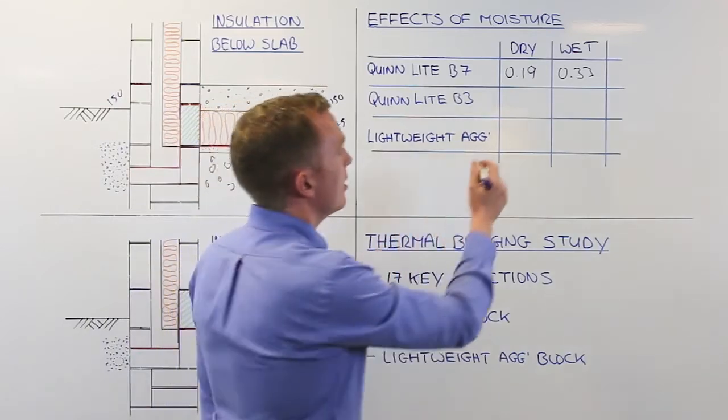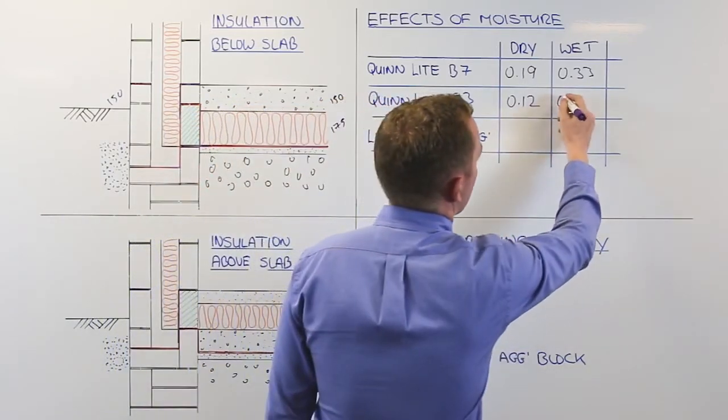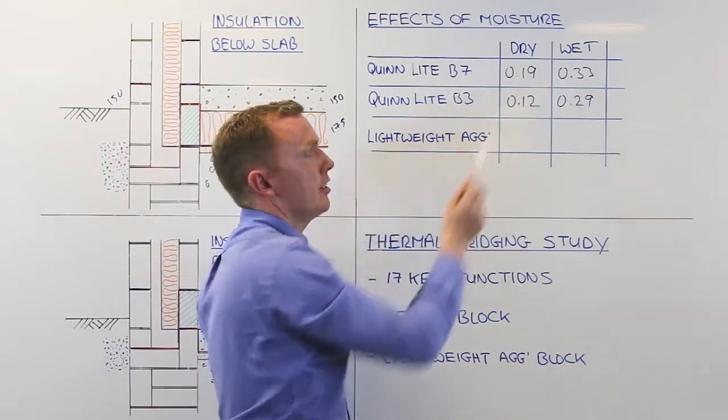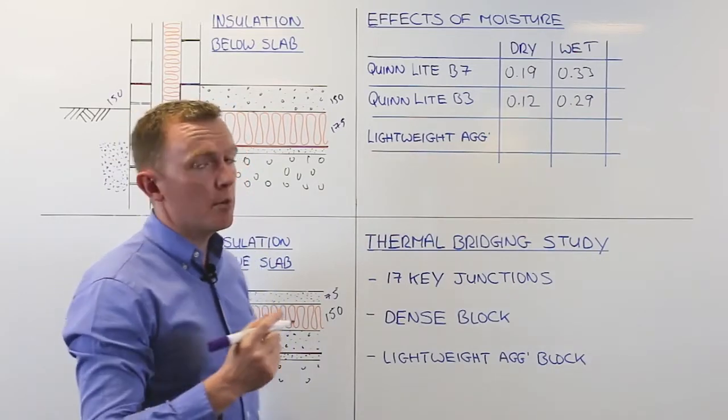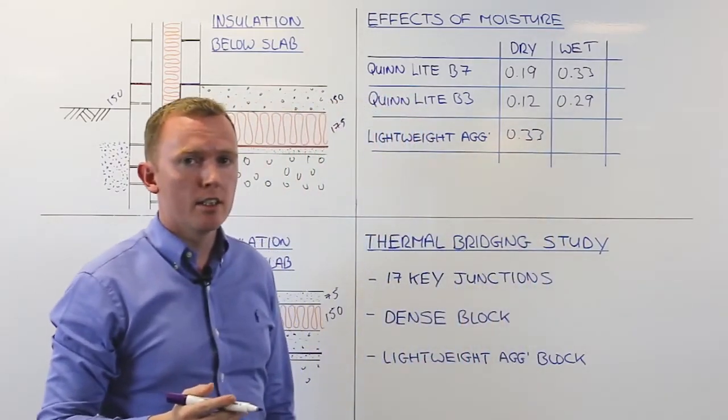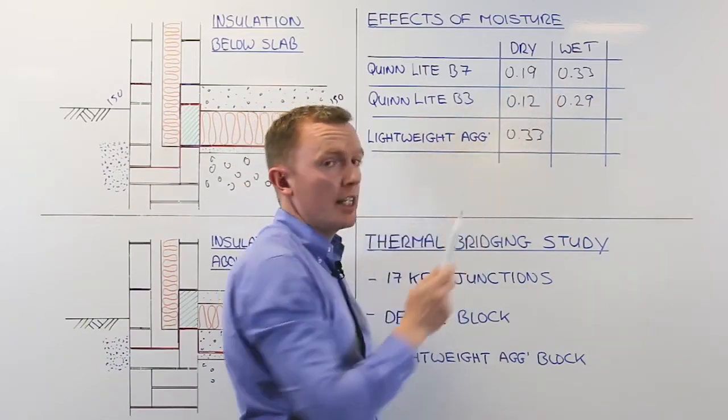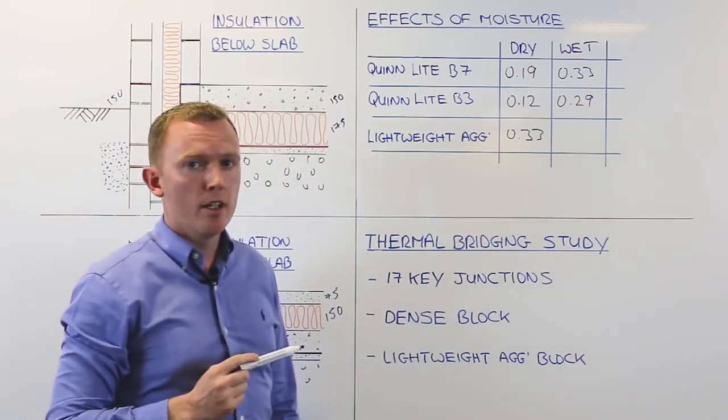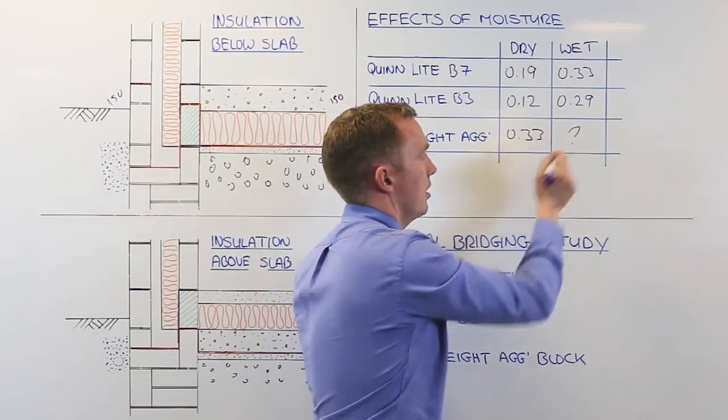We look then at our quinolite B3. The dry conductivity of that block is 0.12 watts per meter Kelvin. The fully saturated conductivity tested at 0.29 watts per meter Kelvin. The interesting thing about this particular figure here is, if we look at another common thermal block which has now been used throughout Ireland, the lightweight aggregate block, the thermal conductivity of that block in its dry state is 0.33 watts per meter Kelvin. So even if the detail is not done correctly, like we've shown earlier on, the thermal performance of our block in its fully saturated state, which is absolute worst case, is still on a par with a dry lightweight aggregate block. So what we must ask ourselves is, what's the thermal performance of a lightweight aggregate block in its wet state?